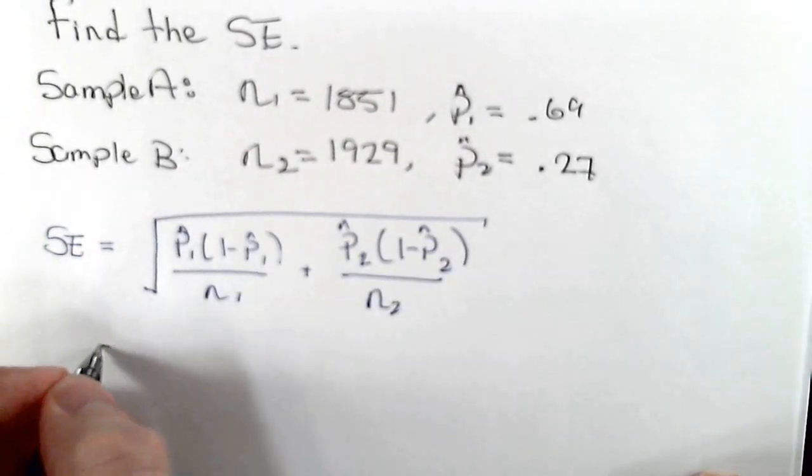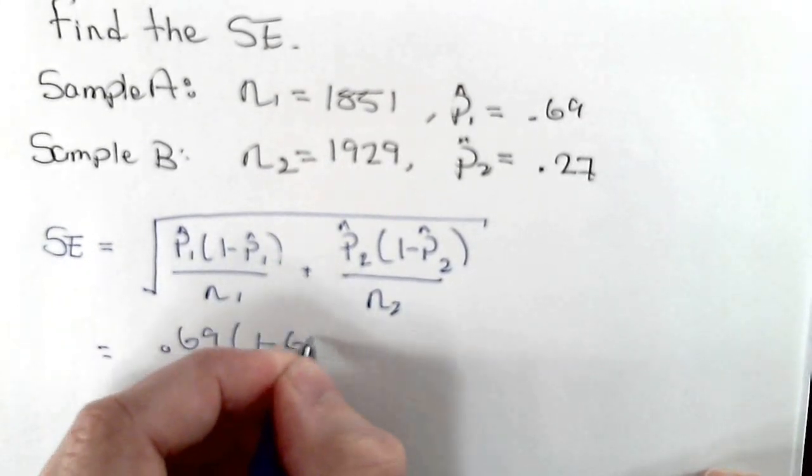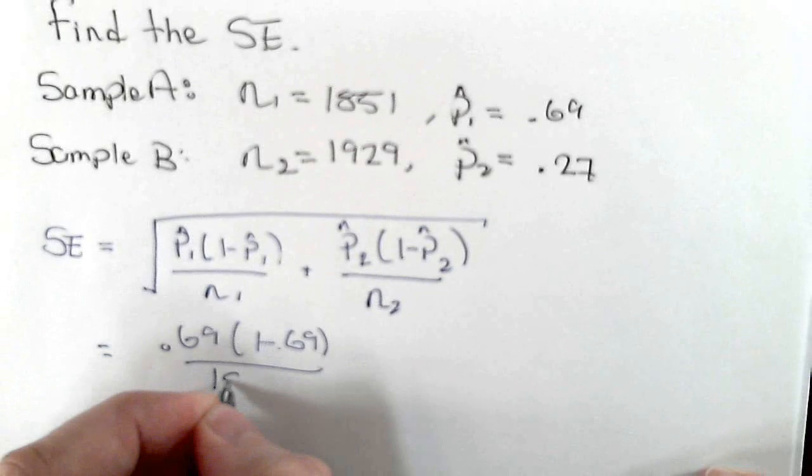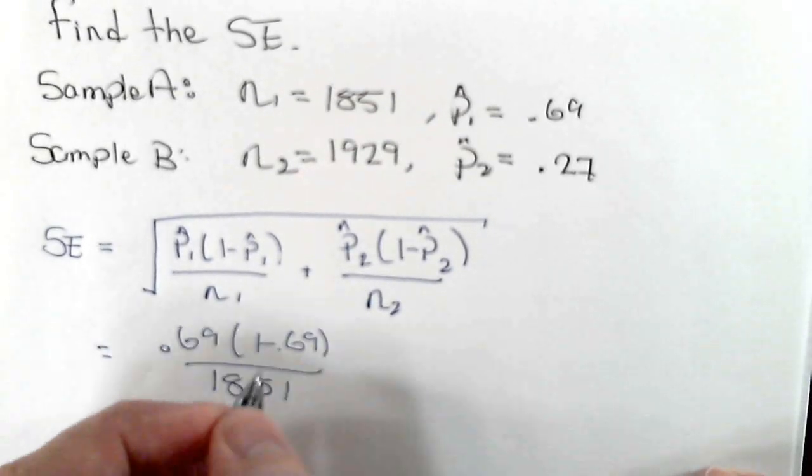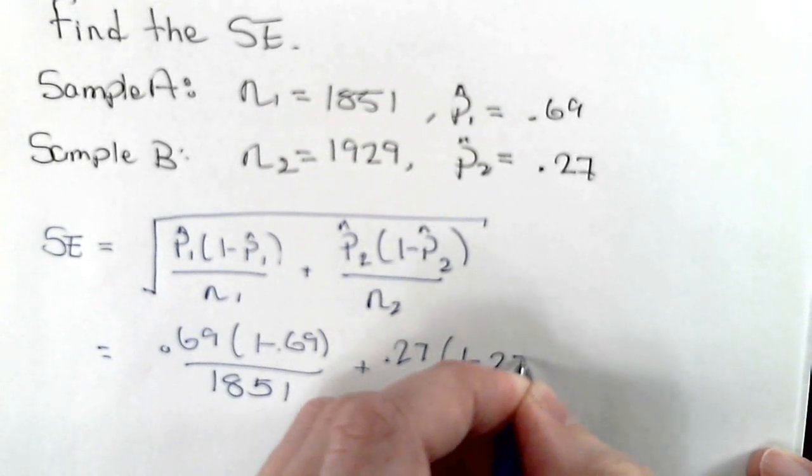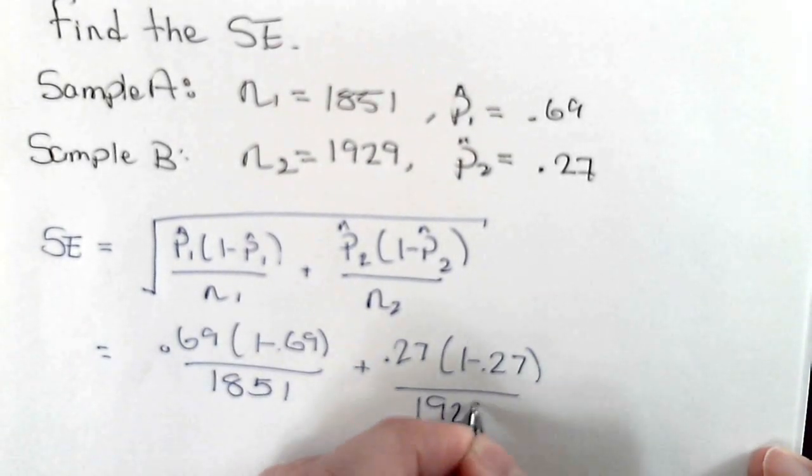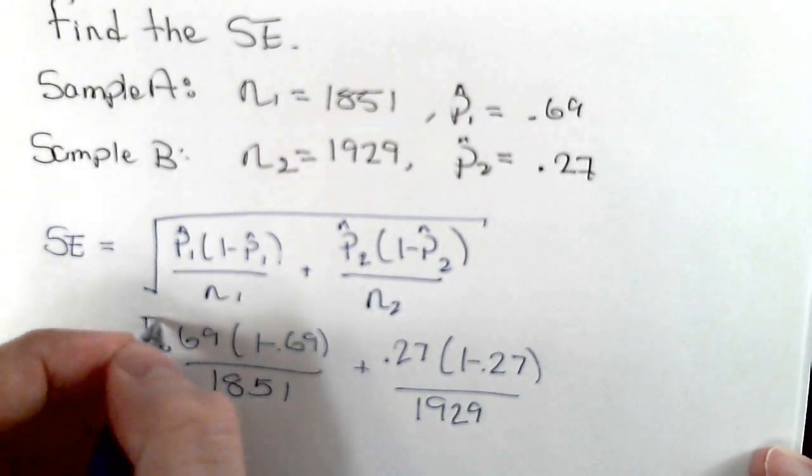So for this situation it's 0.69 times 1 minus 0.69 divided by 1,851, plus 0.27 times 1 minus 0.27 divided by 1,929, and that's all in the radicand.